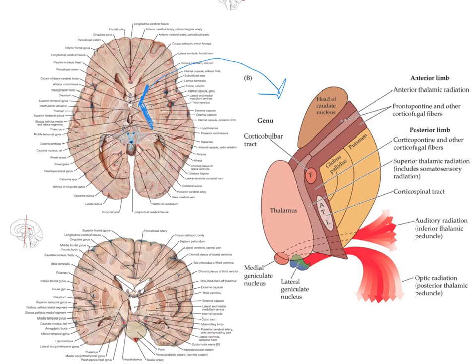Finally, we have some other regions of the internal capsule which are much less important than those first two. They're shown in dark brown in this image and contain a whole number of different types of fiber running from the cerebral cortex downwards. These are so-called corticofugal fibers — the word 'fugal' means moving away from — so these are fibers going from the cortex away from the brain. You don't need to worry about these; they have a whole load of different functions which we're not going to be touching upon in the nervous system unit. So don't worry about the corticofugal fibers, and for the most part you can completely forget about the anterior limb.